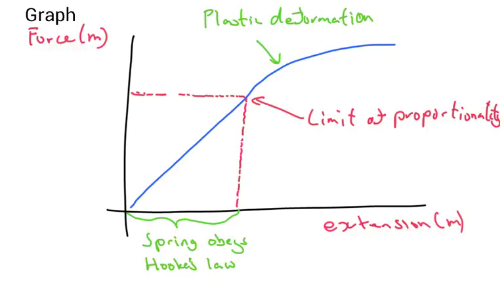Now when you plot your graph what you'll find is at the very beginning that the extension is proportional to the force, but slowly after something called the limit of proportionality, so after a certain point the extension will no longer be proportional to the force, so we'll lose this constant gradient here.